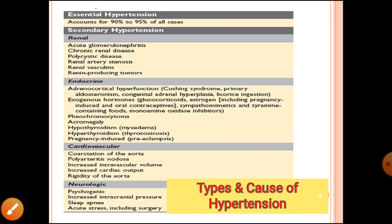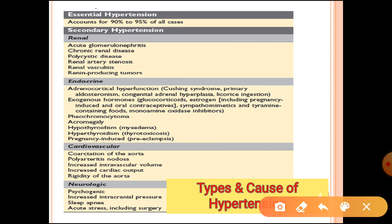So that is all regarding the causes of hypertension. Remember: 90 to 95% of cases are idiopathic (essential hypertension), and the rest can be renal, endocrine, cardiovascular, or neurogenic.